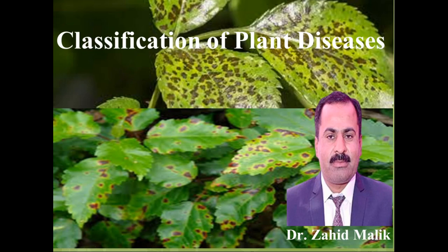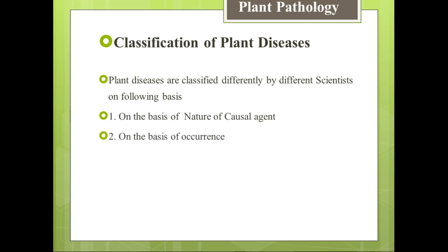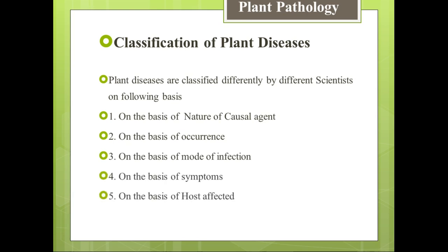Bismillahirrahmanirrahim. Assalamu Alaikum students, I am Dr. Zahid. Today our topic is classification of plant diseases. Plant diseases are classified differently by different scientists on the following bases: number one is on the basis of nature of causal agent, next is on the basis of occurrence, on the basis of mode of infection, on the basis of symptoms, on the basis of host affected, and last one is on the basis of affected parts of host.